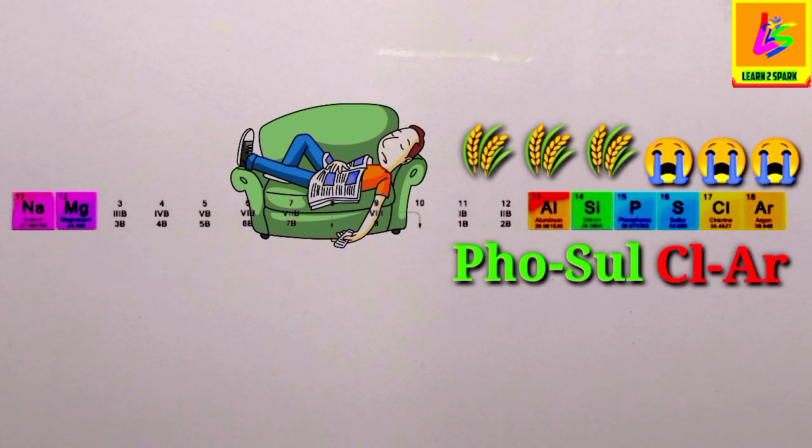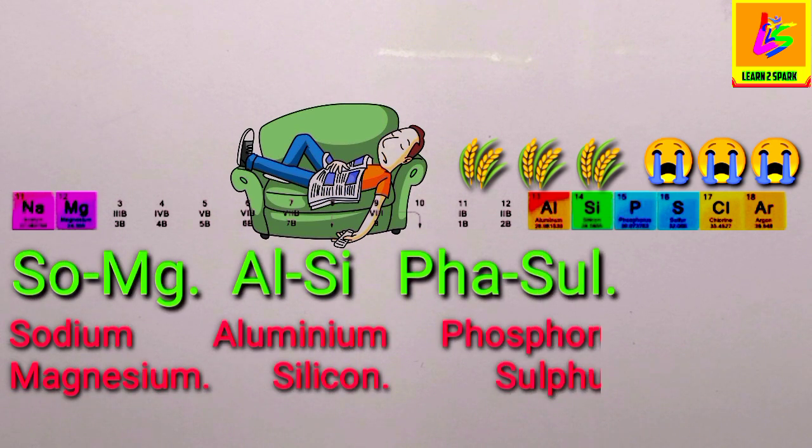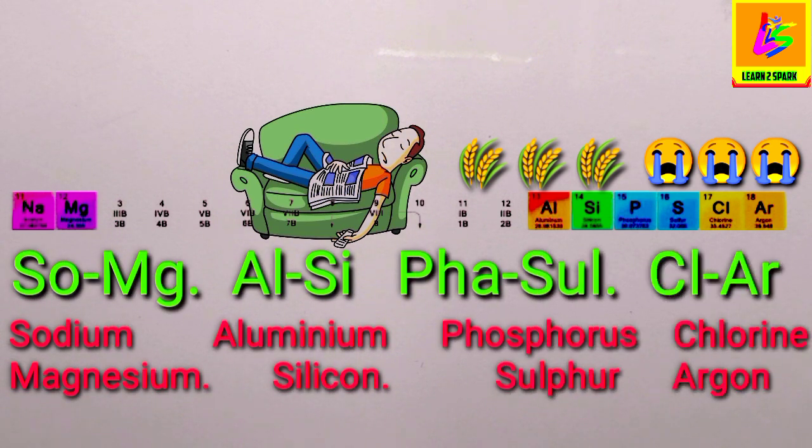So remember, Somag aalsi fasal clear which means Sodium, Magnesium, Aluminium, Silicon, Phosphorus, Sulfur, Chlorine, Argon. See, it's that easy to remember.